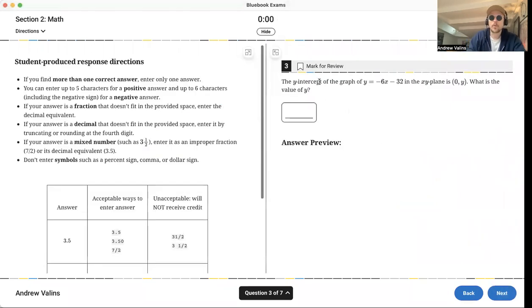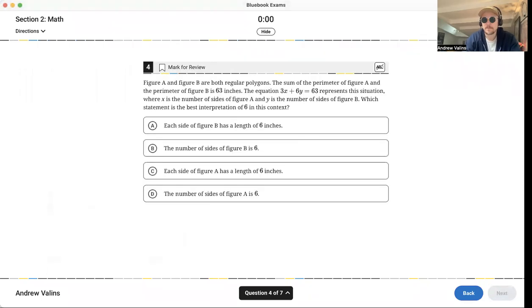Let's move on to number 3. So this is a grid-in question. The y-intercept of the graph y equals negative 6x minus 32 in the xy-plane is 0, y. What is the value of y? So they want the y-intercept. How do we get the y-intercept? Well, in order to get the y-intercept, we make x equal to 0. So we're going to just make this x equal to 0. Negative 6 times 0 minus 32. The 0 kills that, so y equals negative 32. The answer is negative 32.